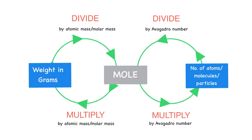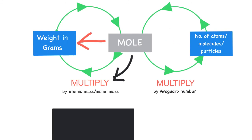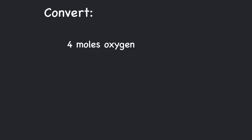When converting moles to grams, simply multiply by the atomic mass for atoms, or the molar mass for molecules. For example, to convert 4 moles of oxygen to grams, multiply 4 by the atomic mass of oxygen, which is 16.